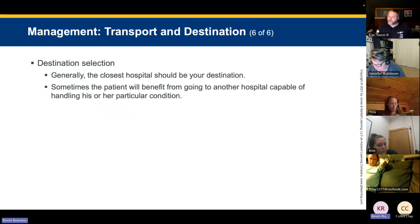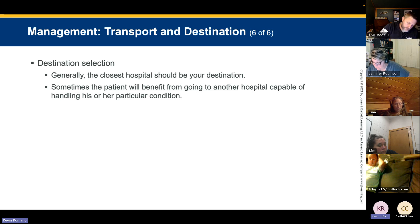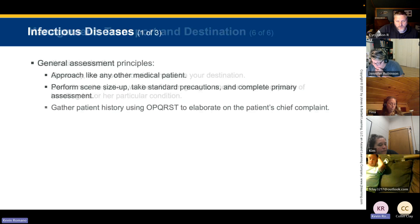For destination selection, the closest hospital is generally your destination, but sometimes a patient benefits from going to a facility capable of handling their specific condition. Know your resources — for example, small hospitals in this area do not have PCI centers; the closest one for us is Dover. If a patient has a urology issue, I may call medical control to bypass to a hospital that can handle it. Know your local centers and their capabilities.